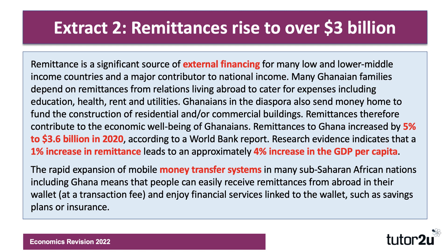At a micro level, many Ghanaian families depend on remittances for things like education, health, and rent. There is also a flow from the diaspora to fund construction of residential and commercial buildings. Remittance flows into Ghana are quite strong — there was a 5% increase in 2020, despite the pandemic, to $3.6 billion.